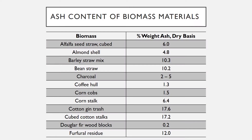Alfalfa seed straw cubed: 6.0% weight ash in dry basis. Almond shell: 4.8% weight ash in dry basis. Barley straw mix: 10.3% weight ash in dry basis. Bean straw: 10.2% weight ash in dry basis. Charcoal: 25% weight ash in dry basis. Coffee hull: 1.3% weight ash in dry basis.